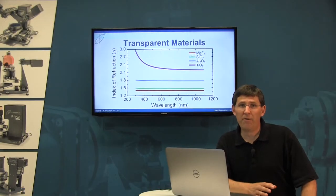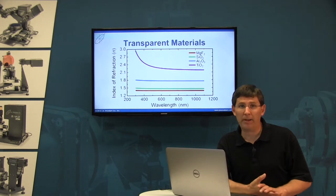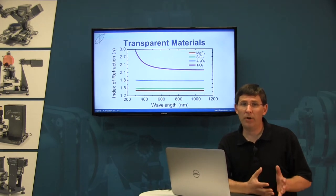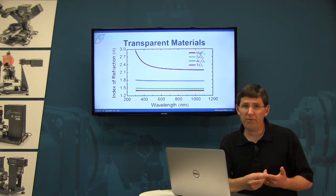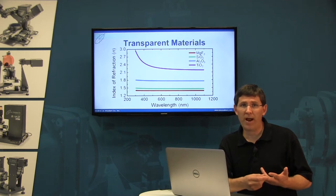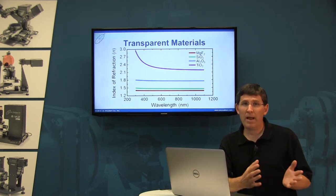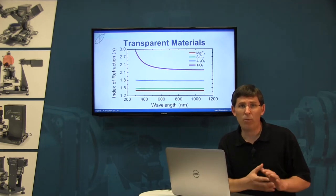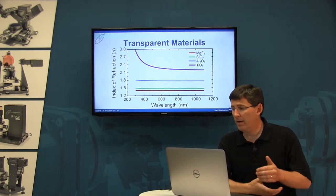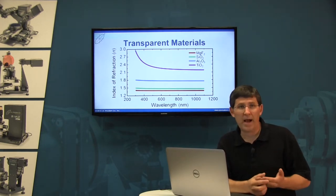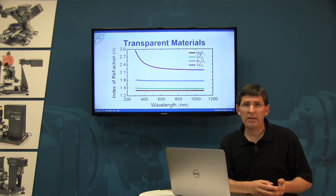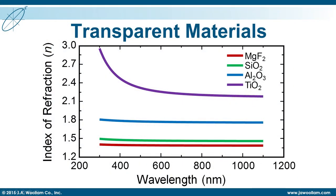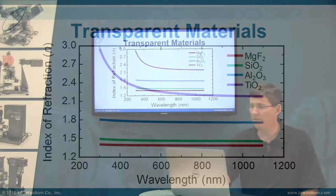Transparent films are going to be a very common application for ellipsometry. You can measure the film thickness and the index of refraction, and many of the layers that you're going to work with will be transparent, at least at some of the wavelengths that you're measuring. They can include dielectrics, organics, even some semiconductors if you're looking at long enough wavelengths. I've shown a few here.